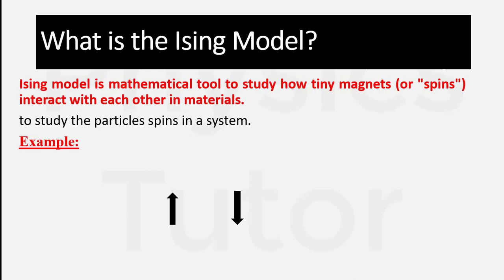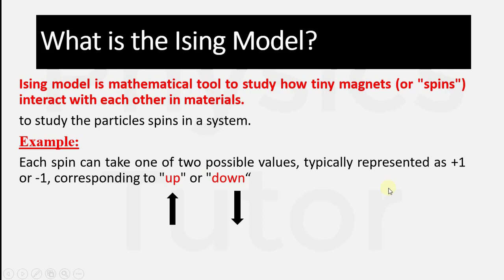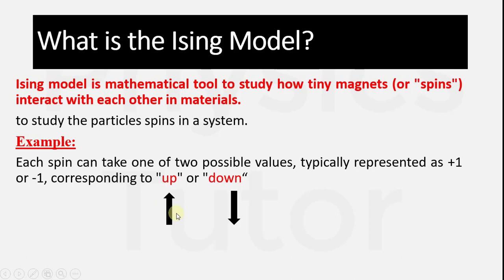Each spin can take one of two possible values, typically represented as positive one (+1) or negative one (-1), or up and down. The upside arrow shows +1 and the downside arrow shows -1. These arrows show the spin motion. As we know, an electron in its orbit moves with orbital motion and spin motion, and we study different conditions in statistical mechanics using models like the Ising Model.